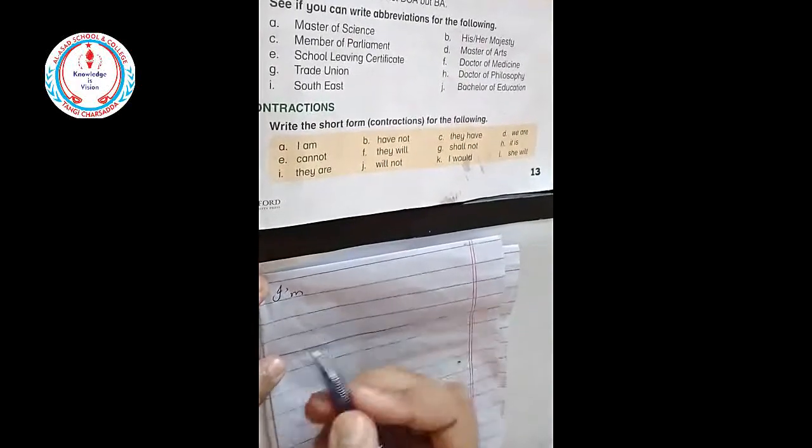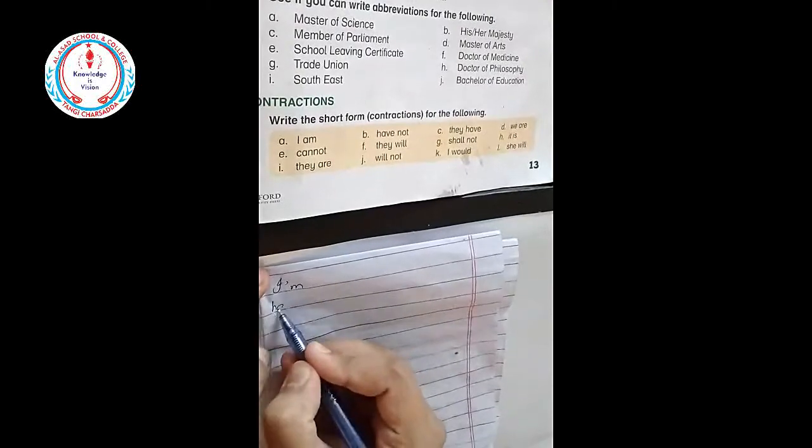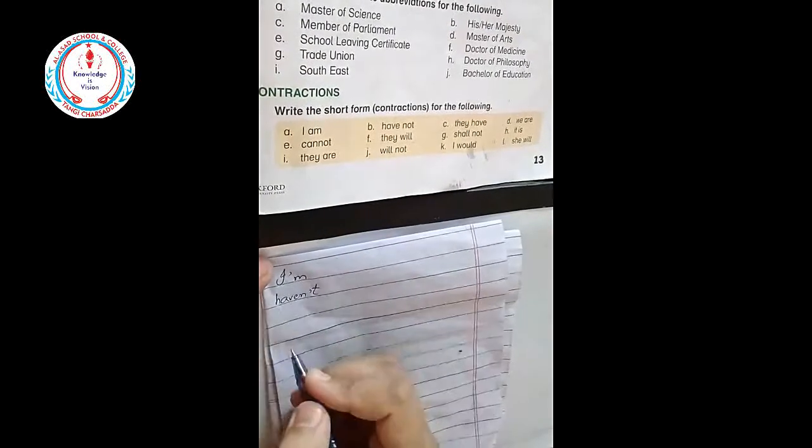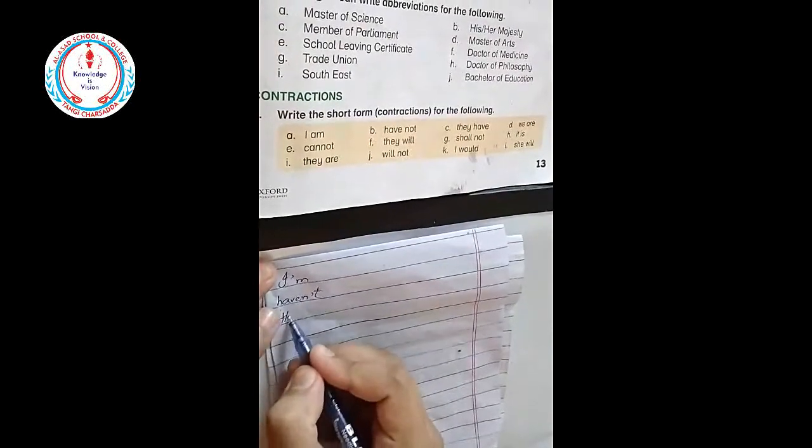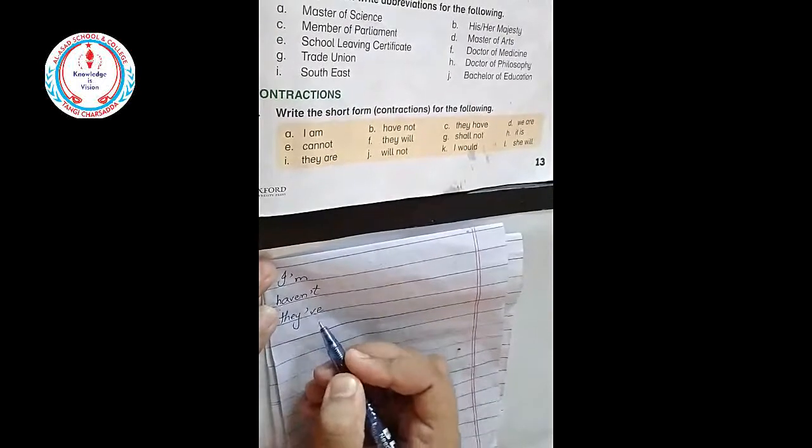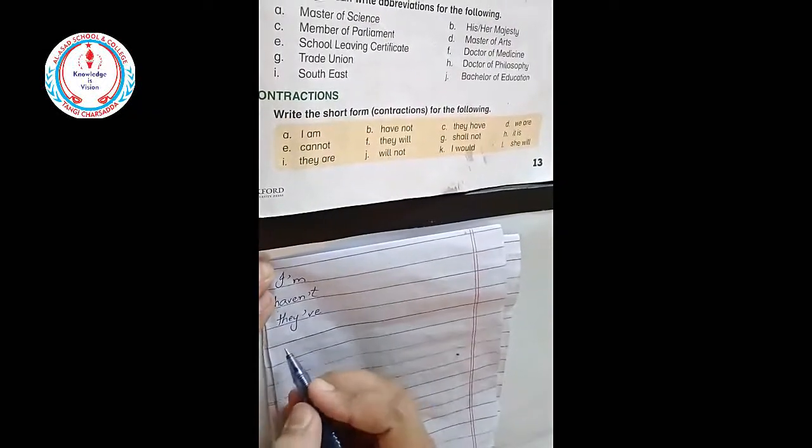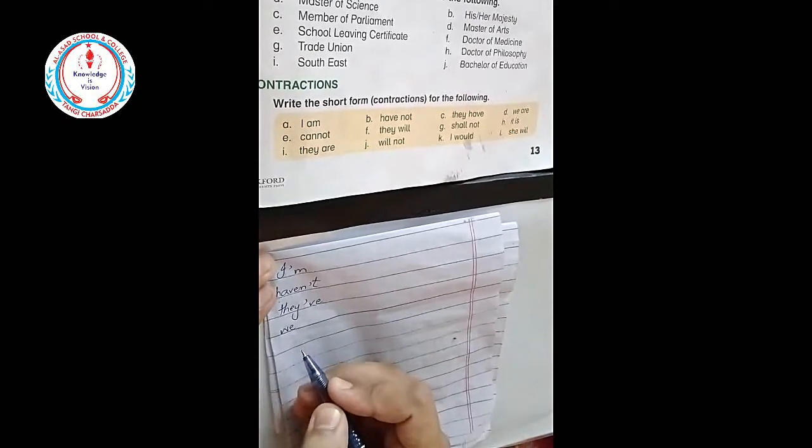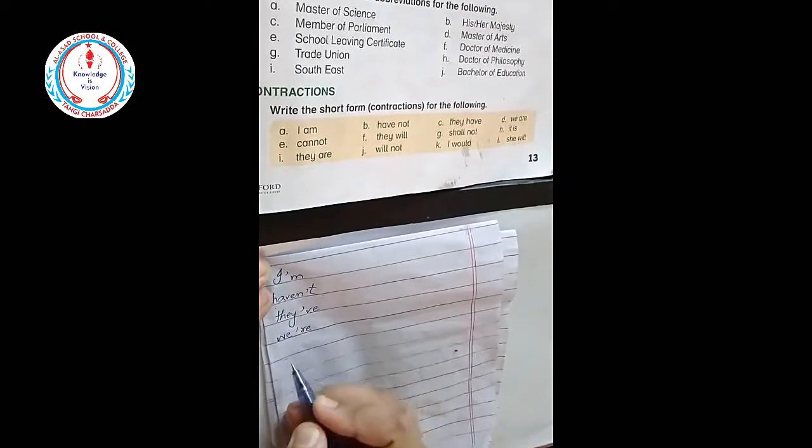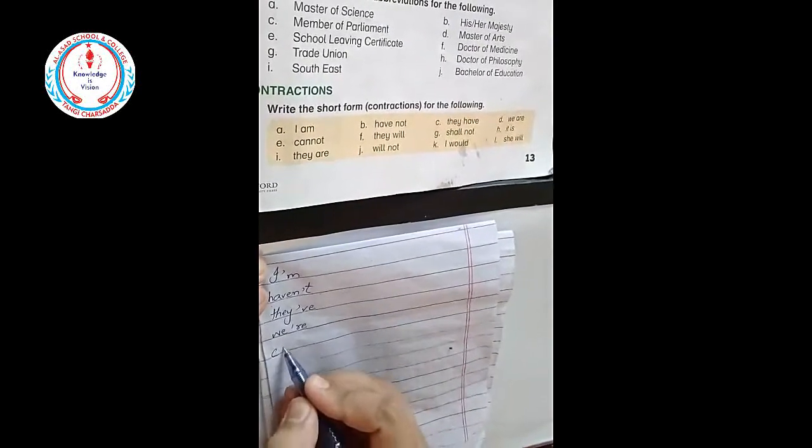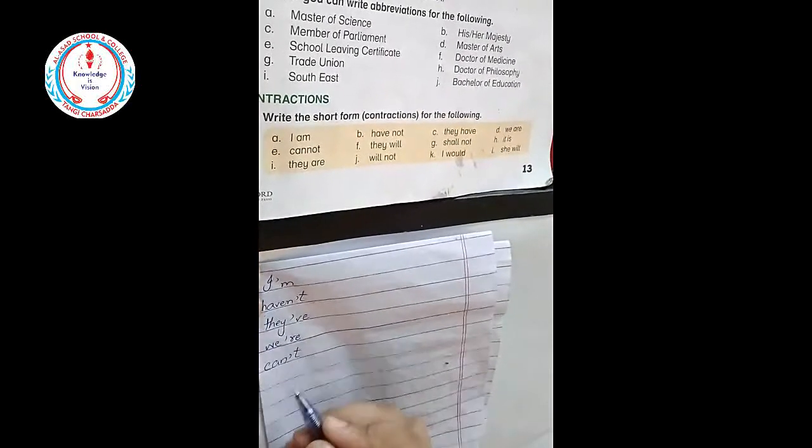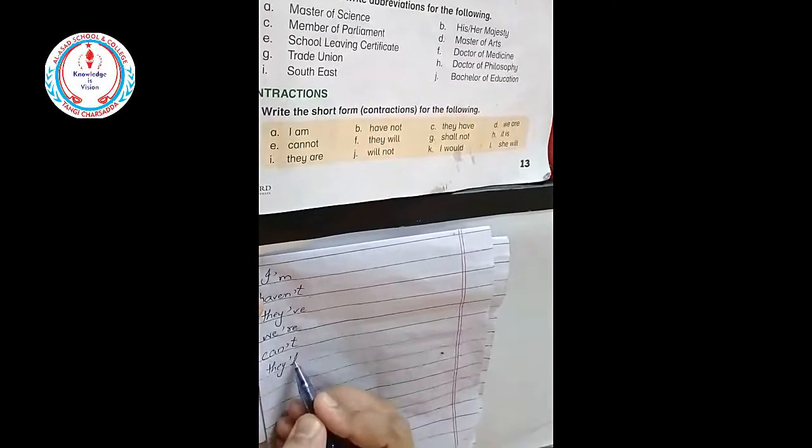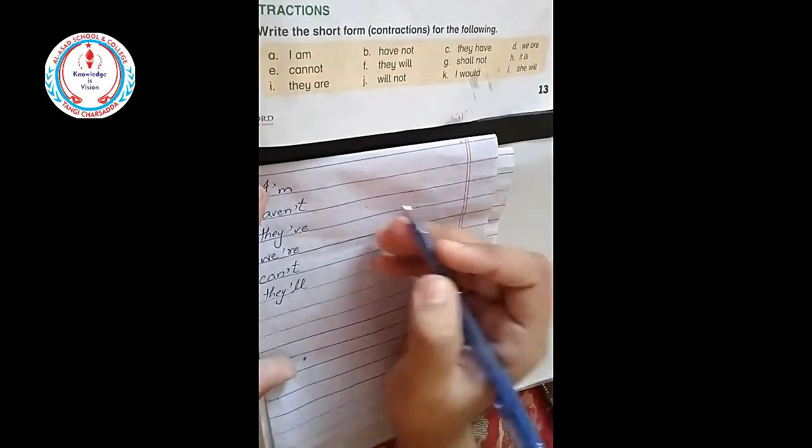Then is have not. Have not we will write in short form like this: haven't. Next one is they have: they've. They have: we are: we're. Cannot: can't. They will: they'll.